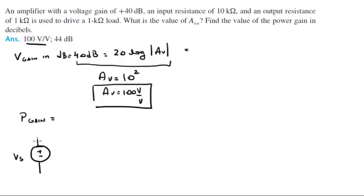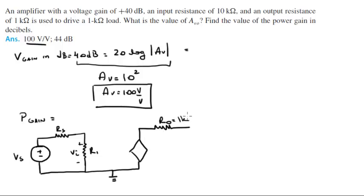This is VS, this is RS, this is the input resistance RI, and this is VI. This is RO which is 1k, this is AVOVI, and this is the resistance of the load RL which is 1k.